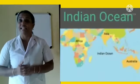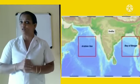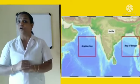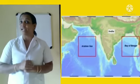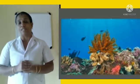The Indian Ocean stands third in size. It has the distinction of being an ocean named after a country. The Arabian Sea and the Bay of Bengal are part of the Indian Ocean. Asia is the northern part of the Indian Ocean. The coral reefs are an important feature of the Indian Ocean.